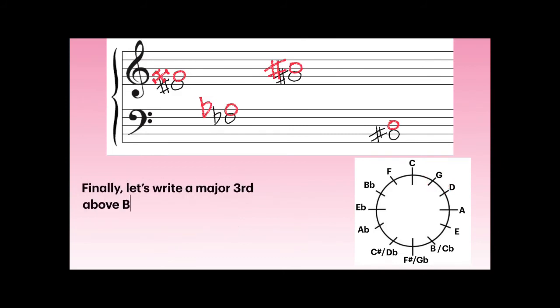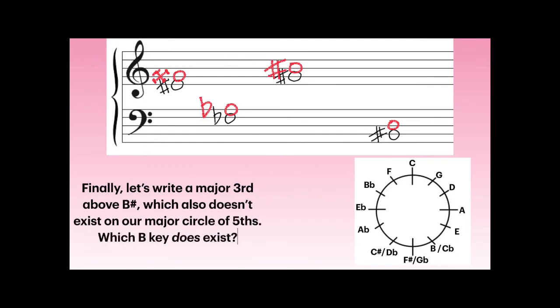Let's do the last one. A major third above B-sharp — B-sharp doesn't exist on our major circle of fifths, but B does. B major has five sharps: F, C, G, D, and A. So we need to go up to some kind of D — is D on that list? Yes, so a B up to a D-sharp is a major third. That means a B-sharp up to a D double-sharp is also a major third. Starting to make sense now?